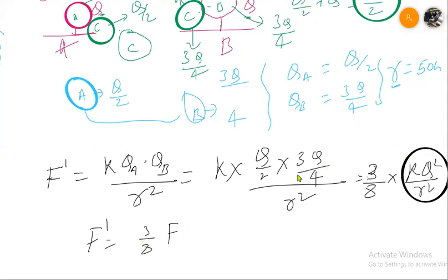In the previous question we have found the force. Originally force was 1.52 into 10 to the power minus 2 Newton. So the new force will be 3 by 8 times 1.52 into 10 to the power minus 2 Newton. So this will be the answer.